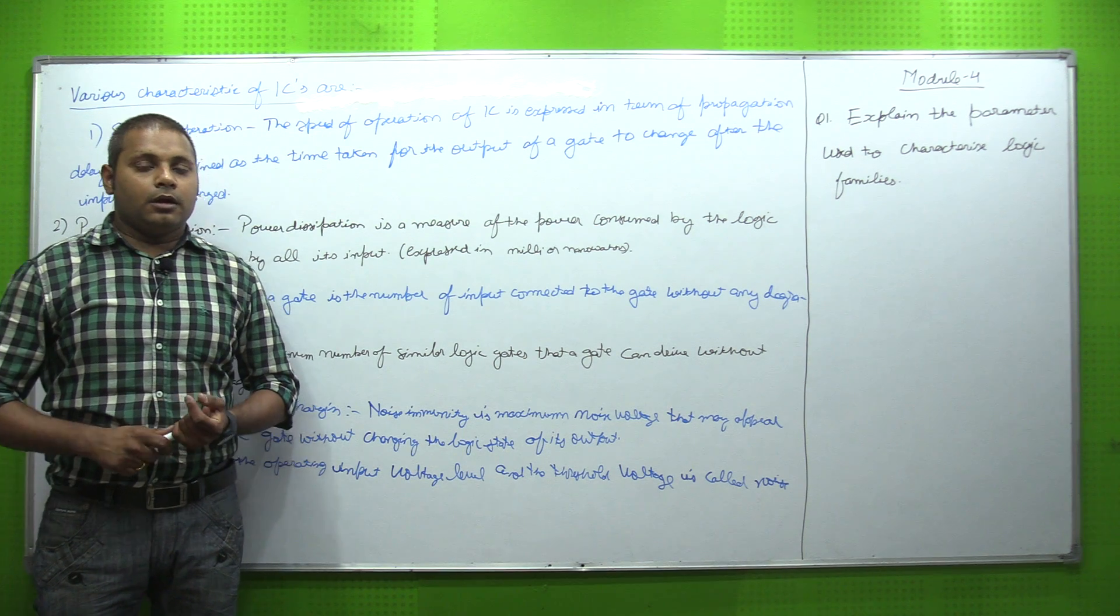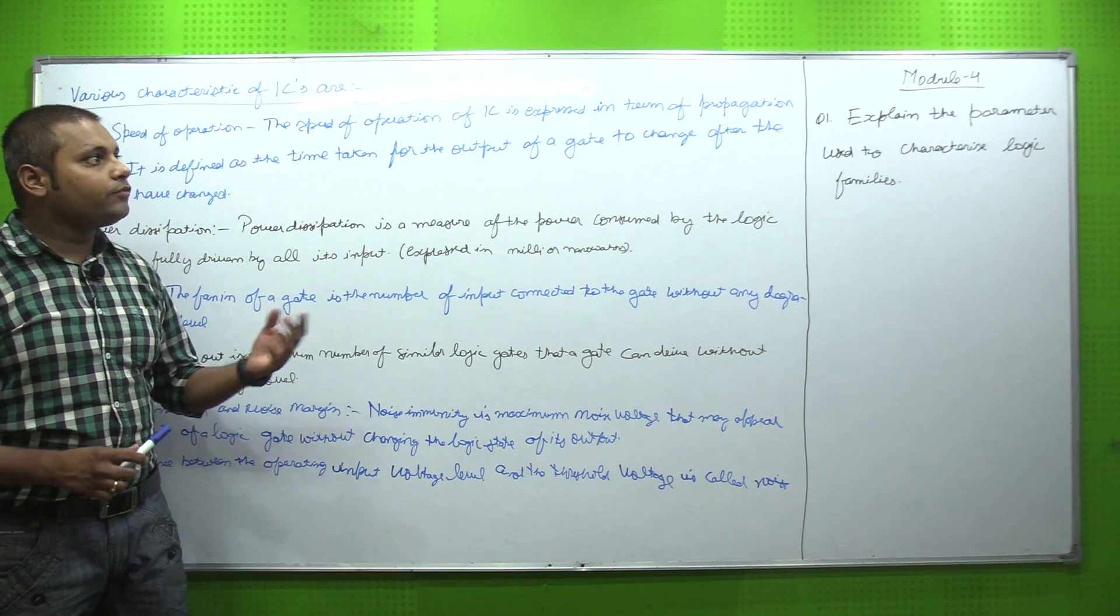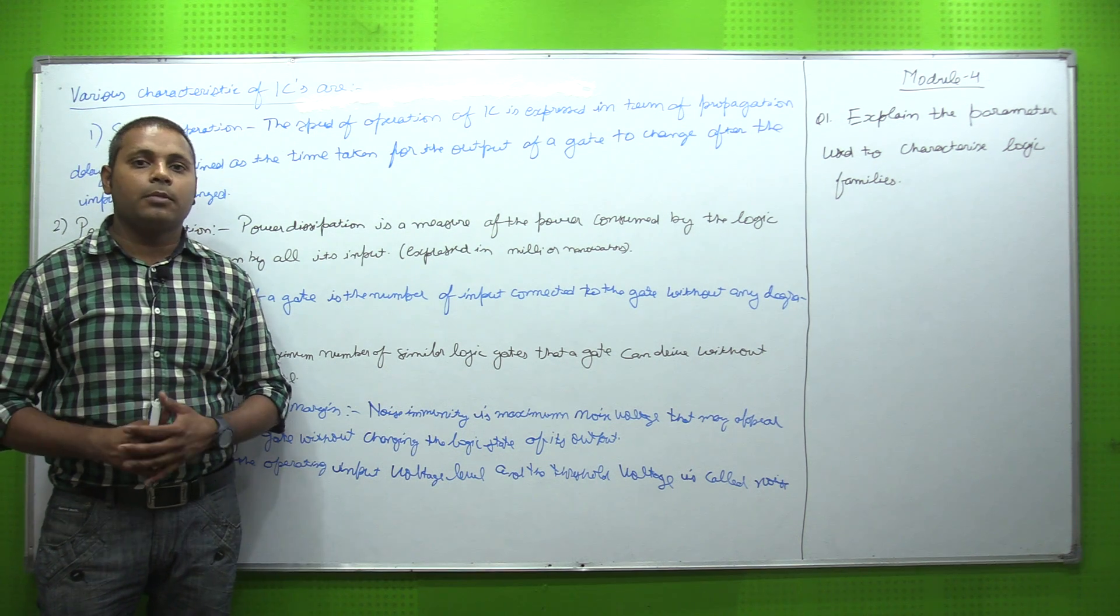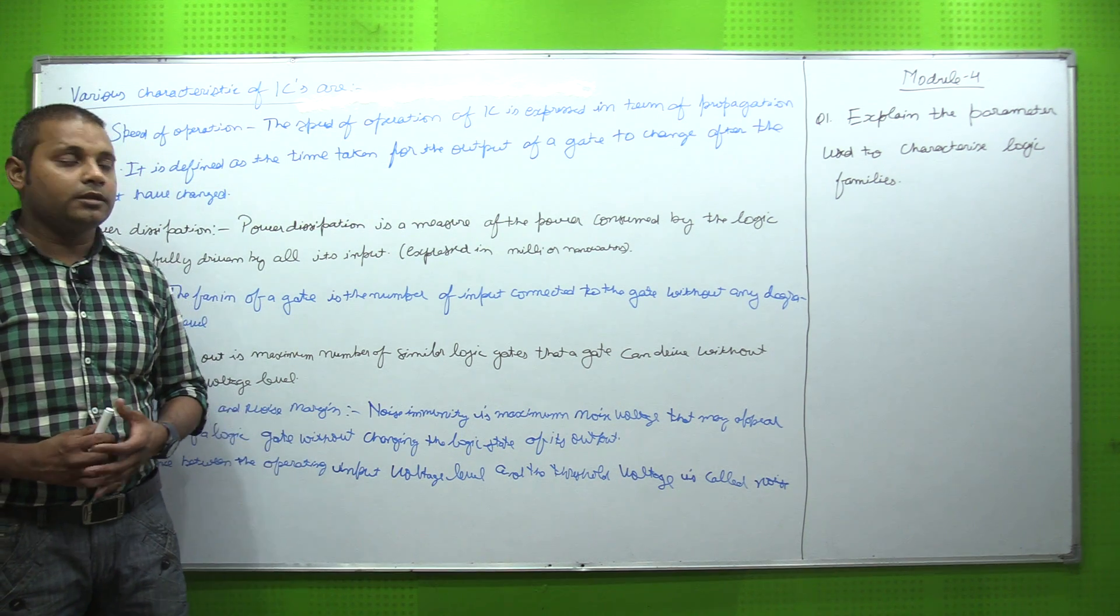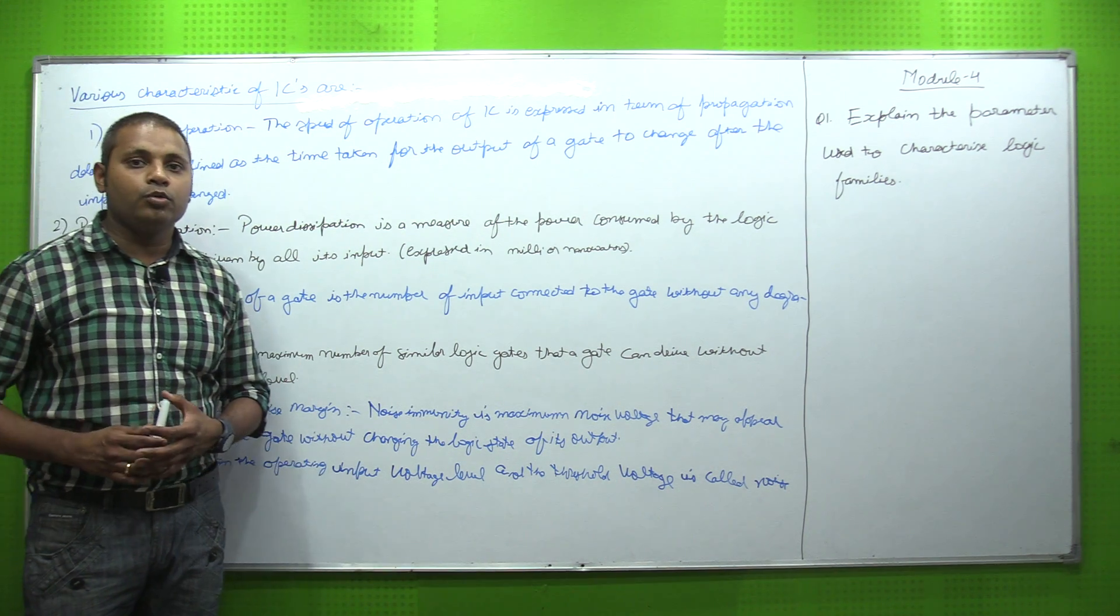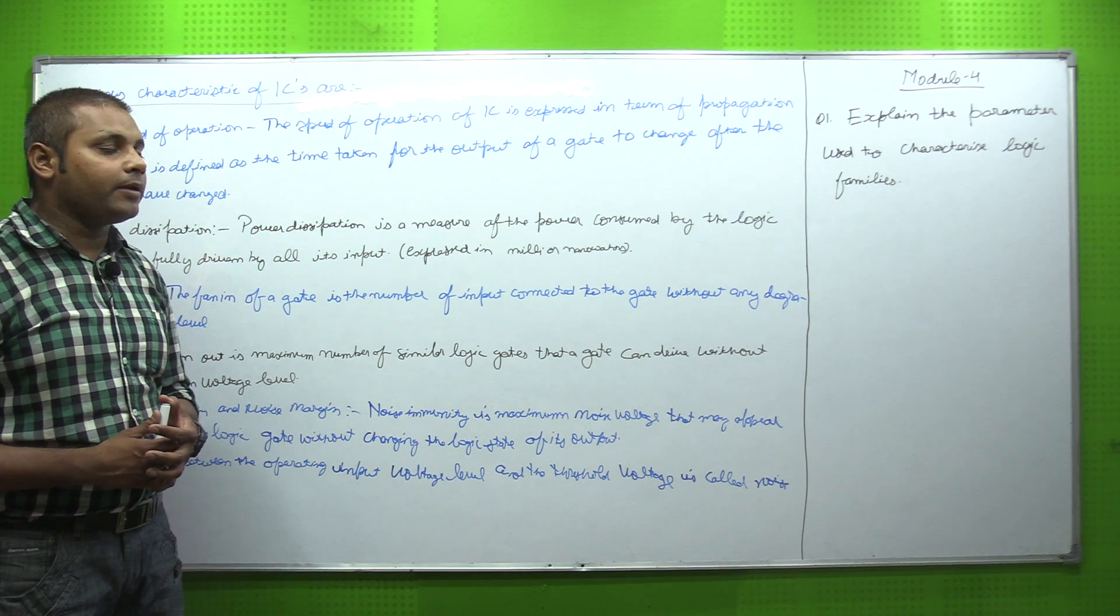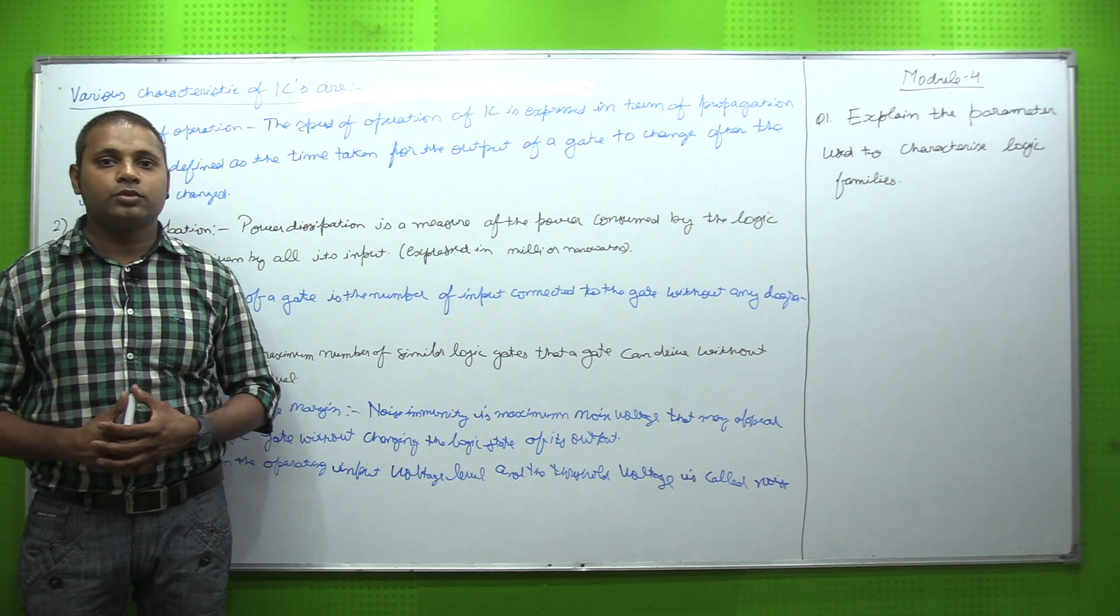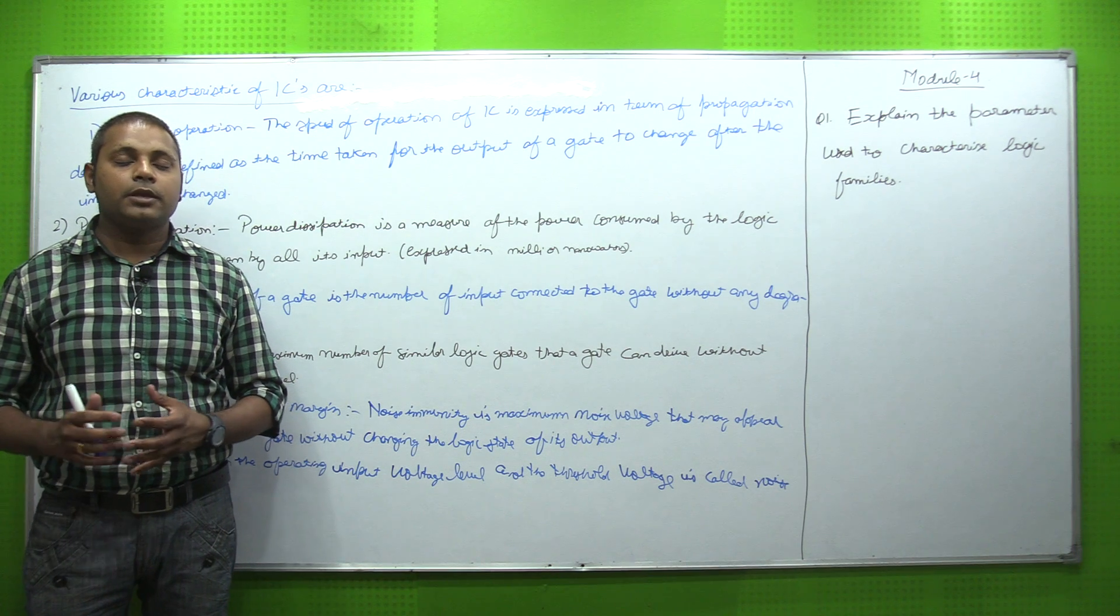Hello everyone, our next unit is Unit 4. In Unit 4, we are going to study the characteristics of ICs and something about FPGA. Now, the question number one for the module is: explain the parameters used to characterize logic families. Whatever ICs we use, there are particular characteristics that we have to operate within.